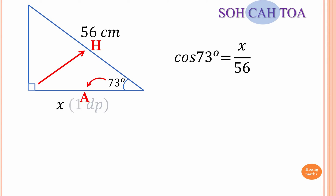Remember, the last letter is always on the bottom. So C is for cosine: cos(73°) = x (adjacent) over 56 (hypotenuse). To solve for x, we multiply both sides by 56 to get rid of it. So x = 56 cos(73°).